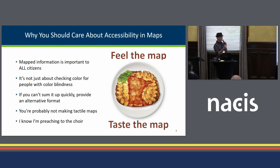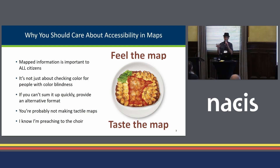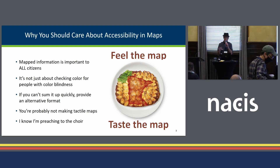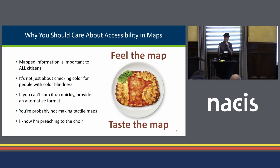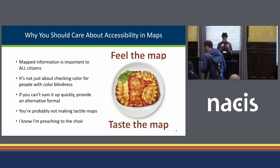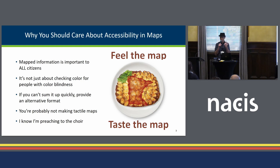If you're making tactile maps, like this tater tot hot dish map on the right, God bless you, you are doing God's work — but that's not what this is about. This is about our typical static PDF map that someone consumes on their computer, and if they're blind or low vision, they're using a screen reader. We want to make sure every person can have access to the information we're conveying on a map, not just those that can see.